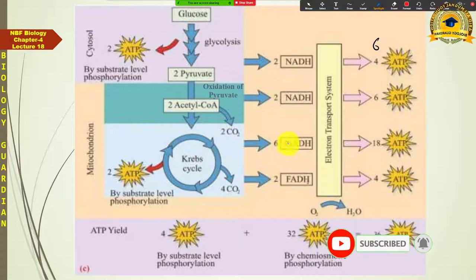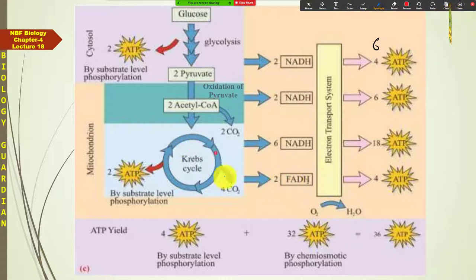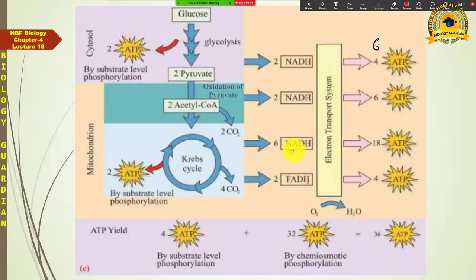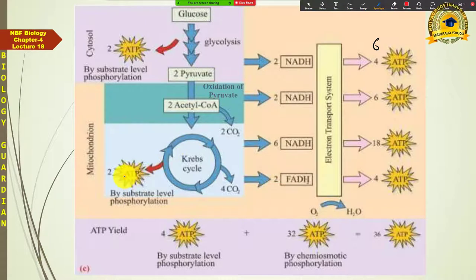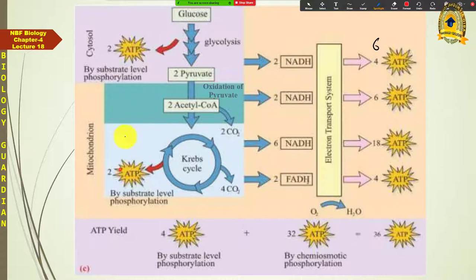In the Krebs cycle, 6 NADH₂ molecules are liberated — 3 in each cycle, 2 cycles total, giving 6 NADH₂. Also 2 FADH₂ are released (1 per cycle). These 6 NADH₂ yield 18 ATPs when oxidized in the respiratory electron transport chain. The 2 FADH₂ yield 4 ATPs. Additionally, substrate level phosphorylation in the Krebs cycle generates 2 ATPs when succinyl-CoA converts and GTP donates phosphate to ADP.